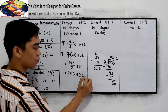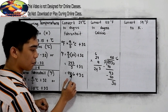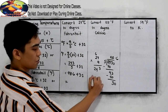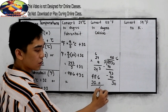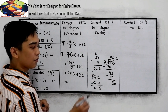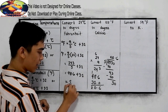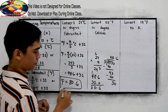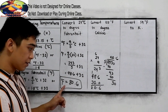We need to add 32. So 48.6 plus 32: 6 plus 0 is 6 tenths, 8 plus 2 is 10 carry 1, 4 plus 3 plus 1 is 8. So the result is 80.6. Therefore, 80.6 degree Fahrenheit is our answer.